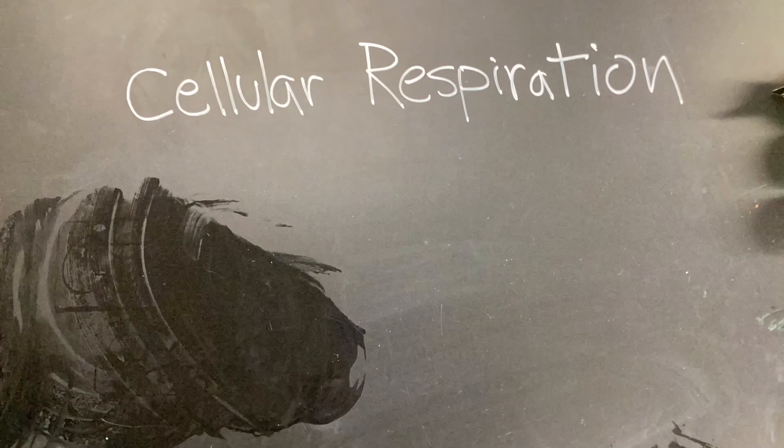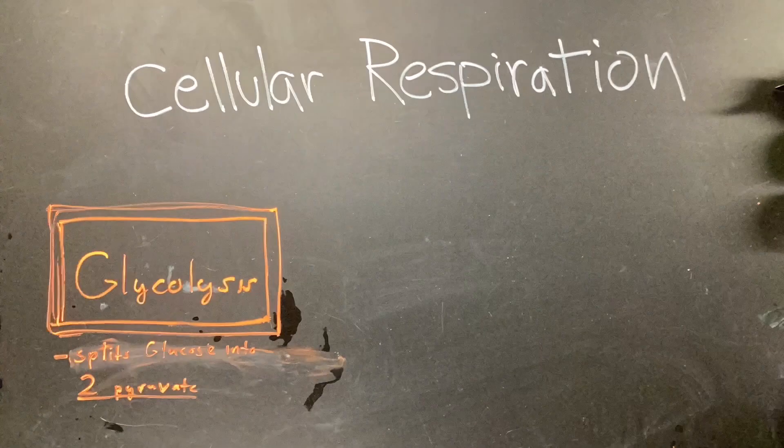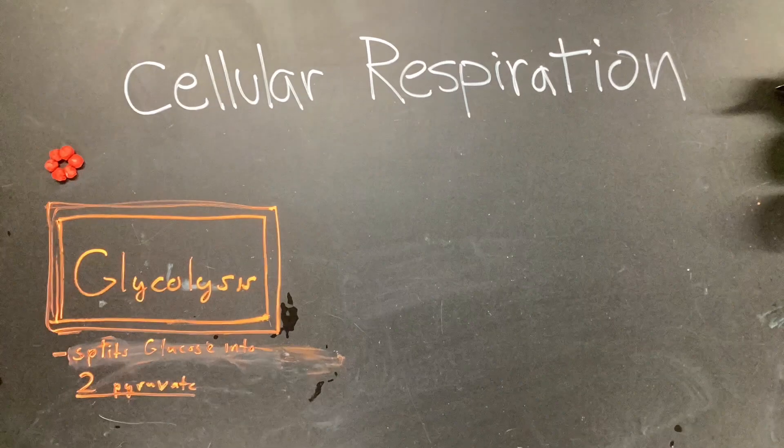The first step of cellular respiration is glycolysis, which converts glucose into two pyruvates and produces two ATP.